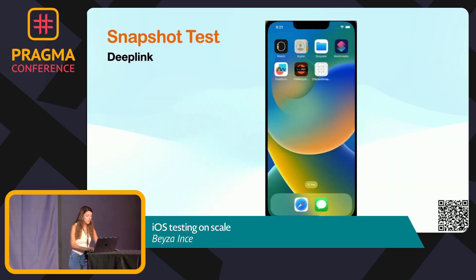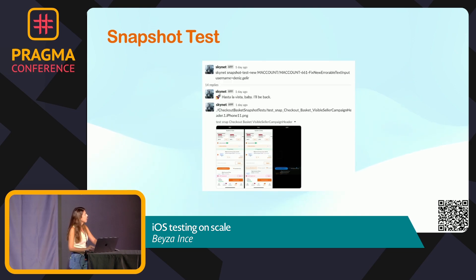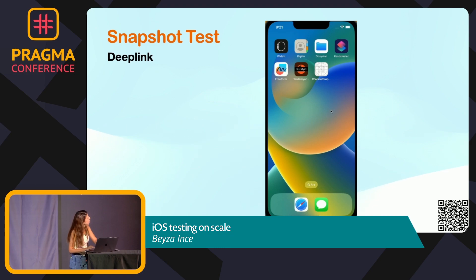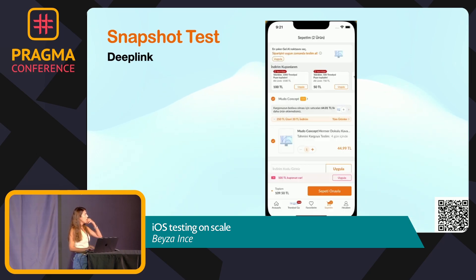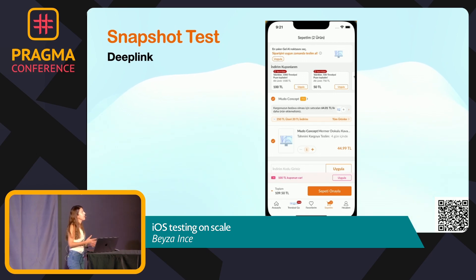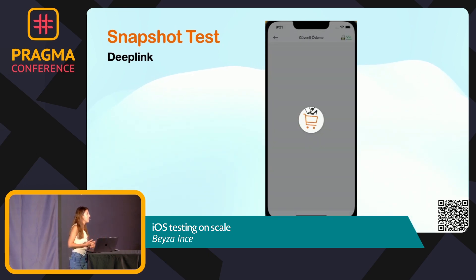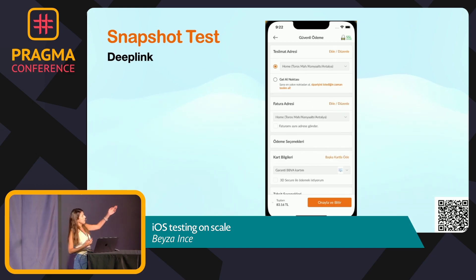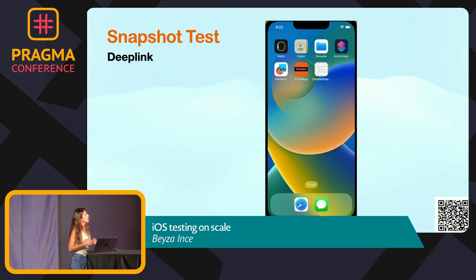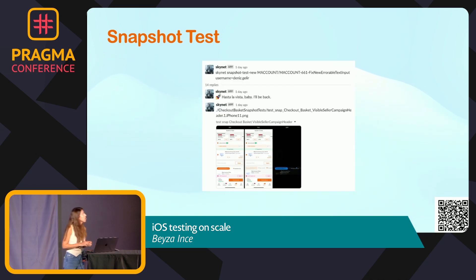Now we can see one of the examples for deep link. You can see that we opened the application using our internal deep link engine instead of Safari, and with this we can reduce our starting process in the snapshot test to a very short time. We can access the relevant screen with the deep link.